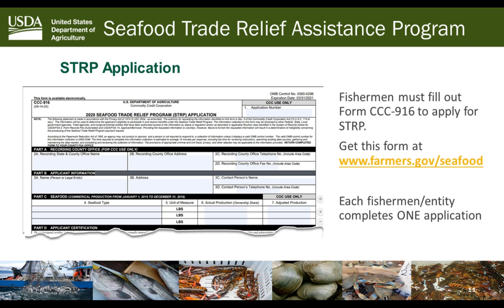A fisherman is essentially self-certifying — stating that the information is true — unless the county committee requests additional documentation. They could request it for an accurate determination, or as part of a spot check process that USDA conducts on all programs. What you certify to must be backed up by documentation. If someone certified to more than their documentation supports, or cannot provide any documentation, USDA would collect that difference back. Keep those documents on file for up to three years after applying.